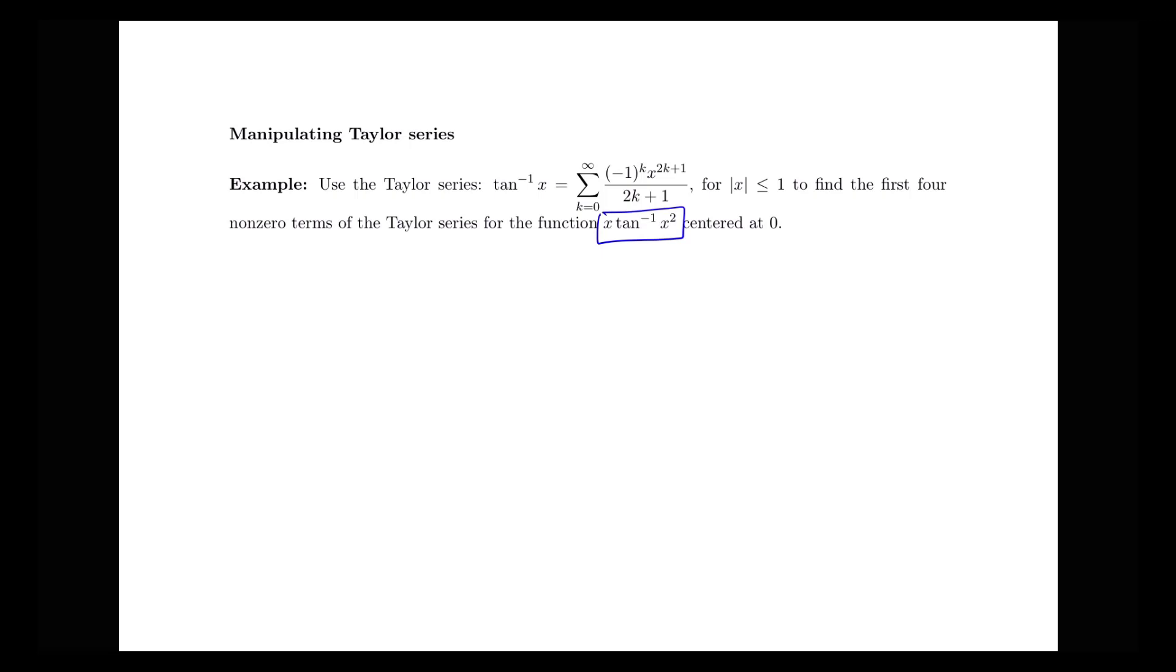So instead of using the definition of a Taylor series to find the Taylor series for this x times tan inverse of x squared, I'm going to use the Taylor series that I have for inverse tan here and just do some manipulations on that.